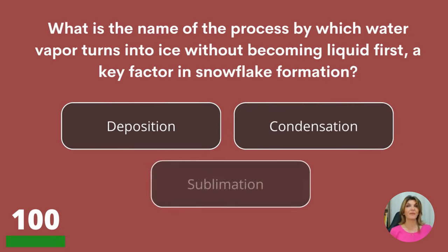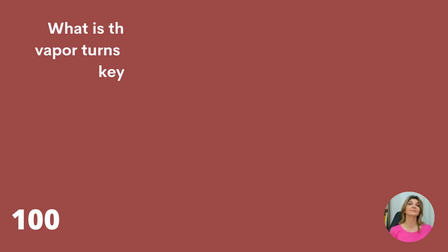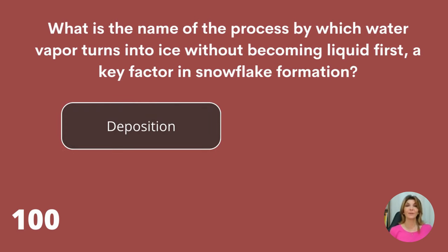What is the name of the process by which water vapor turns into ice without becoming liquid first, a key factor in snowflake formation? Deposition, condensation, or sublimation? Deposition.